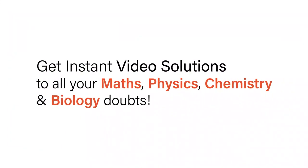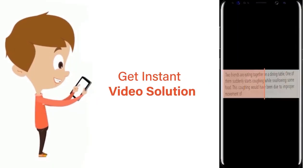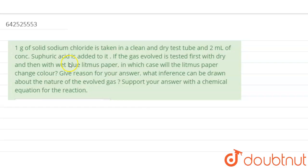With Doubtnet, get instant video solutions to all your math, physics, chemistry, and biology doubts. Just click the image of the question, crop the question, and get instant video solution. Download Doubtnet app today. The question is: one gram of solid sodium fluoride is taken in a clean and dry test tube and 2 ml of concentrated sulfuric acid is added to it.